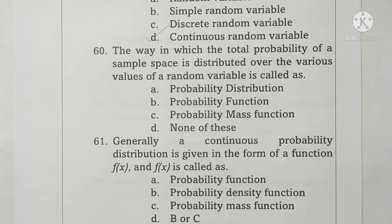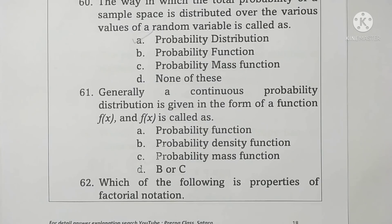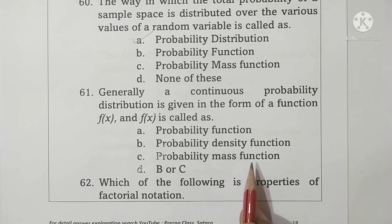Question 60: The way in which the total probability of a sample space is distributed over various values of a random variable is called a probability distribution. Option A is correct. Question 61: A continuous probability distribution is generally given in the form of a function f(x), which is called a probability density function or probability mass function. Since density and mass function are the same here, option D is correct.